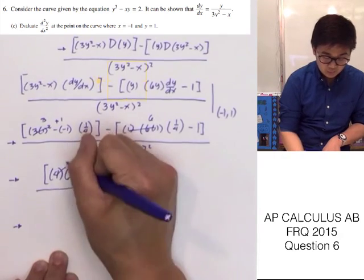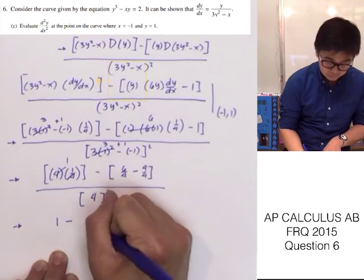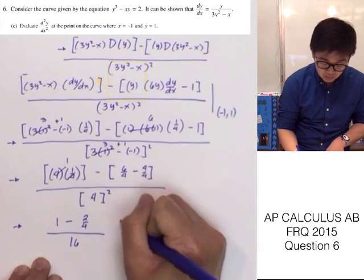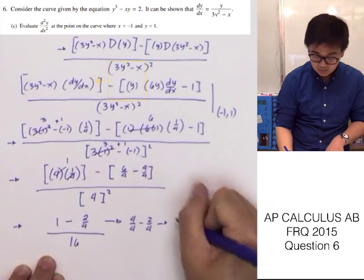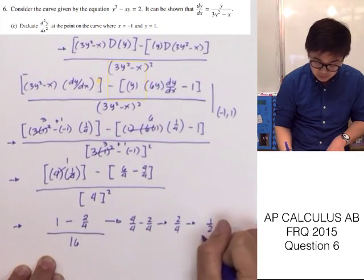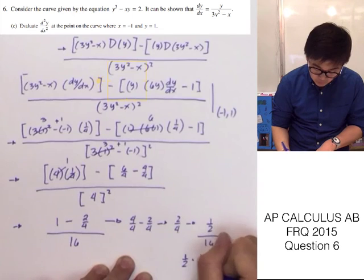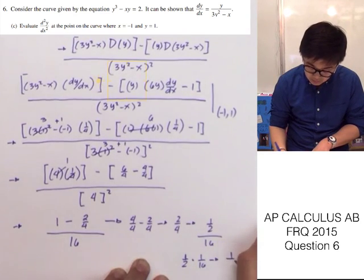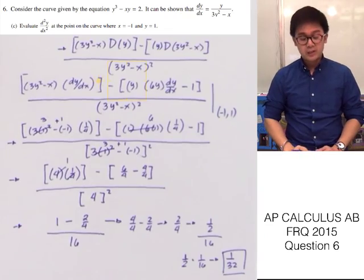Simplifying: 4 times 1 fourth equals 1. Then 6 times 1 fourth equals 6 over 4; subtracting 1 written as 4 over 4 gives 2 over 4, or 1 half. The denominator is 4 times 4 equals 16. So we have 1 minus 1 half equals 1 half, divided by 16, which equals 1 over 32. The value of the second derivative at point negative 1, 1 is 1 over 32. That is how we solve part c of this FRQ.